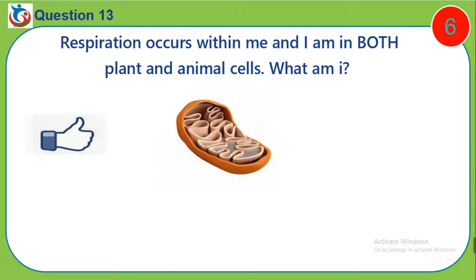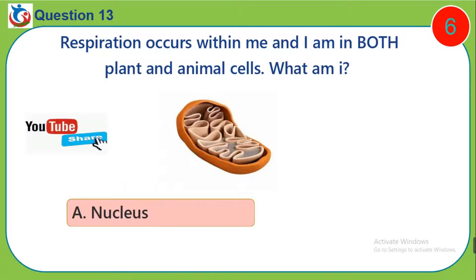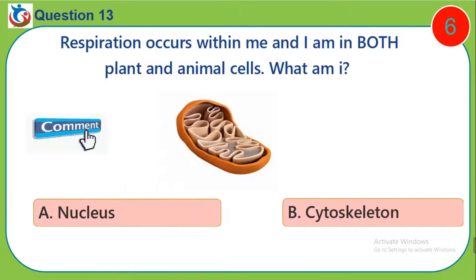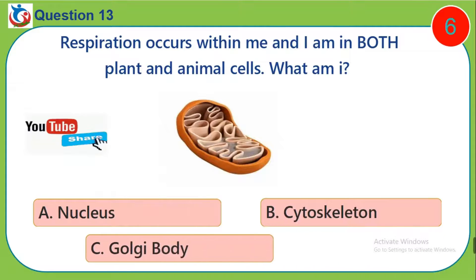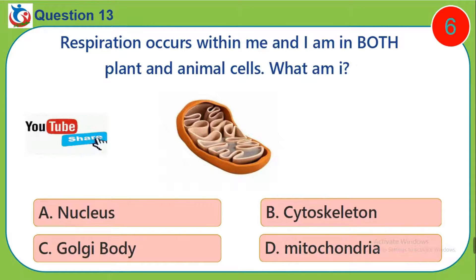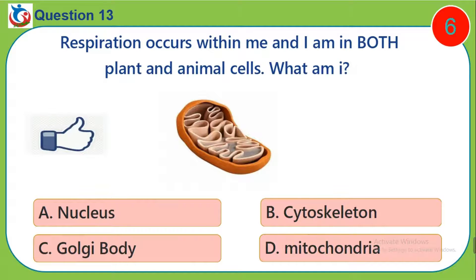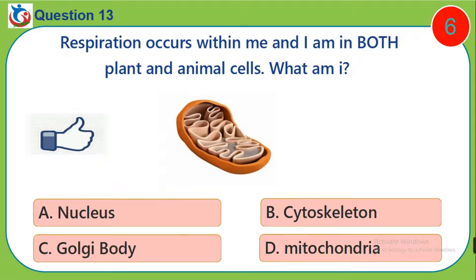Question 13. Respiration occurs within me and I am in both plant and animal cells. What am I? A. Nucleus. B. Cytoskeleton. C. Golgi body. D. Mitochondria.